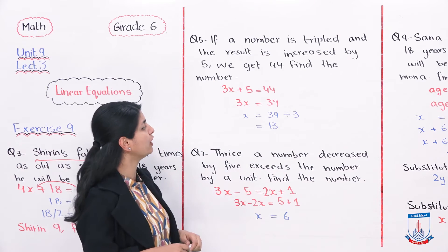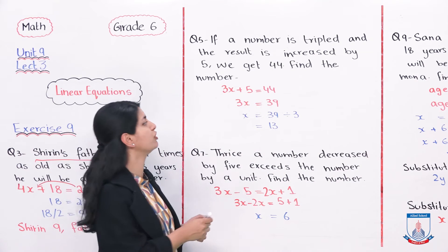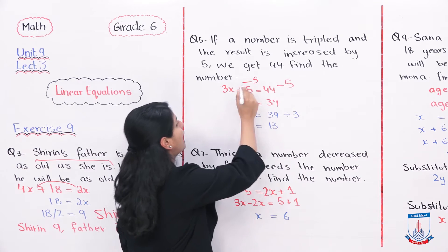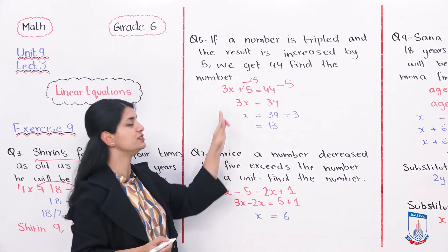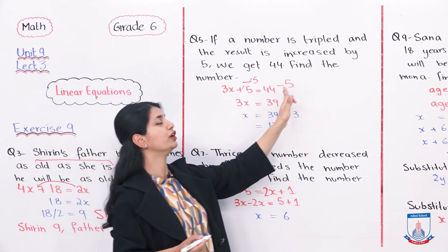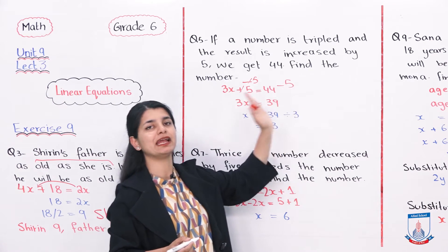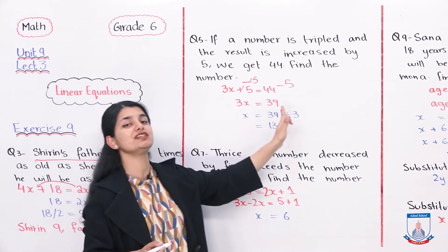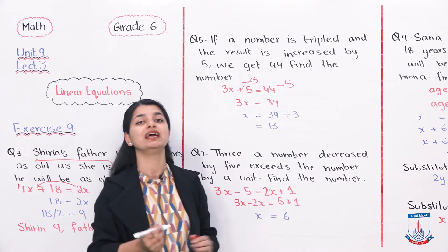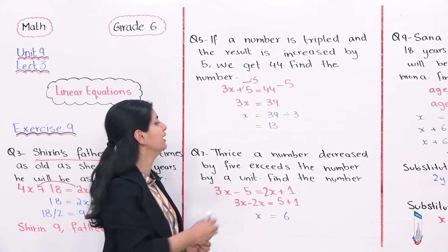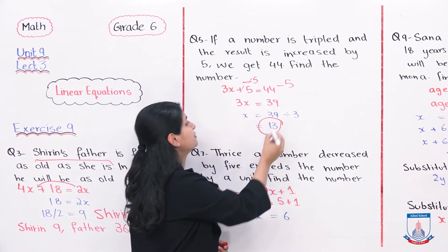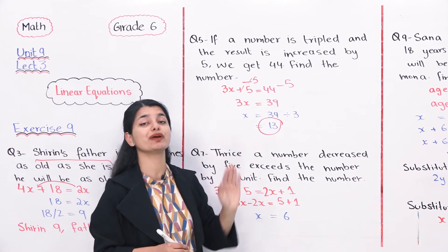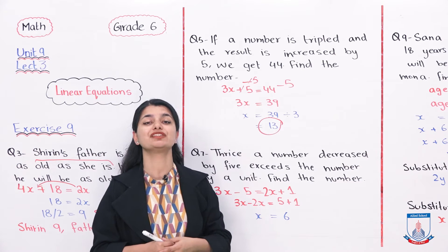Now we solve 3x plus 5 equals 44. We subtract 5 from both sides, giving 3x equals 39. Then we divide both sides by 3, and 39 divided by 3 is 13. So the value of x, the number, is 13.